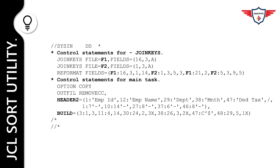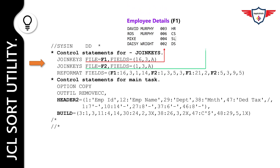In the following control card, the control statement is split into two sections: subtask and main task. In the first section, you must specify two join key statements — one for the F1 file and another for the F2 file. A separate subtask will be used to process each file. The first join key statement defines the DD name and keys for the F1 file. The parameter FILE=F1 tells DFSort that the DD name for the F1 file is SORTJNF1. FIELDS=(16,3,A) tells DFSort that the first binary key is in position 16, length 3, ascending. Since SORTED is not specified, DFSort will sort the SORTJNF1 records by the specified binary keys.